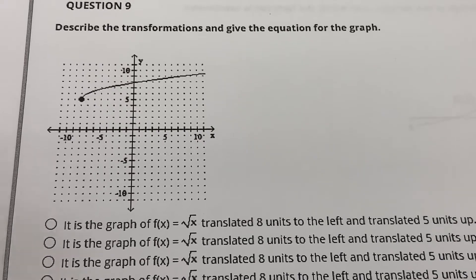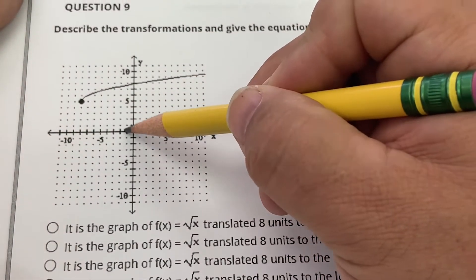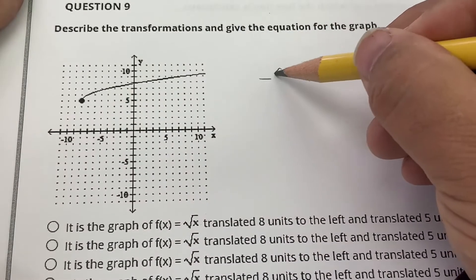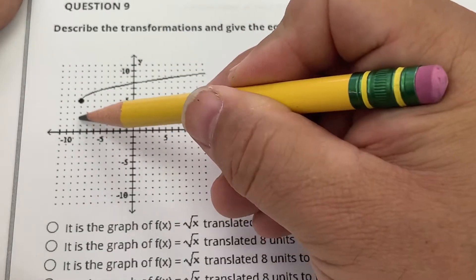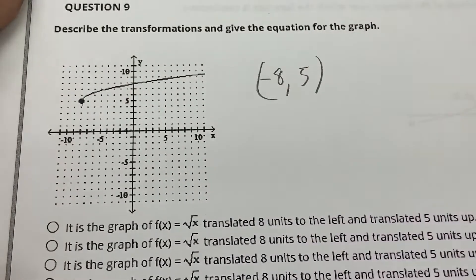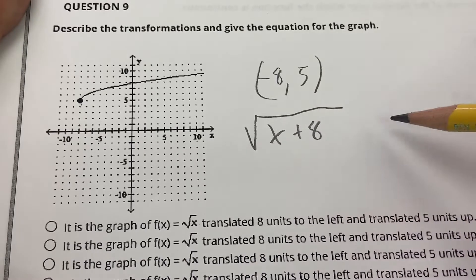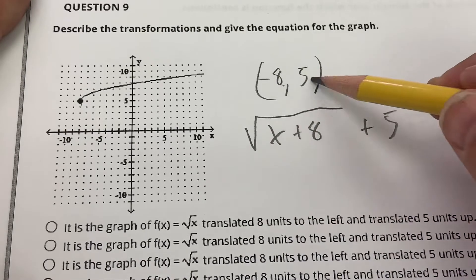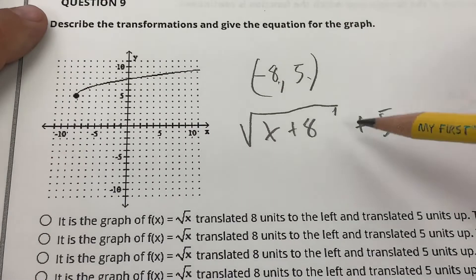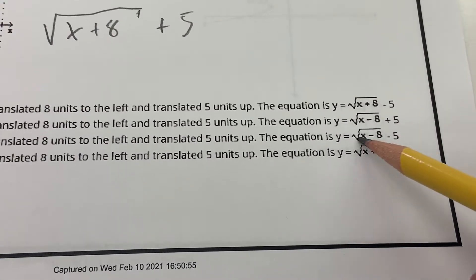Describing the transformation: it went left 8 and up 5, and it's a square root function. So it's going to be the square root of (x + 8) + 5 — opposite inside with the radical function — and that's choice D.